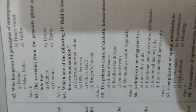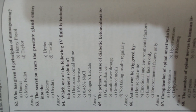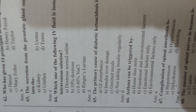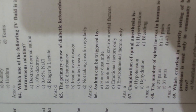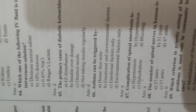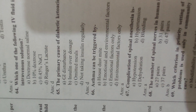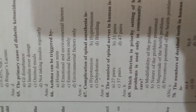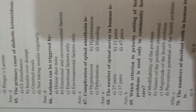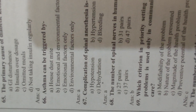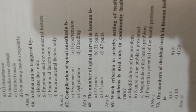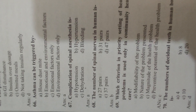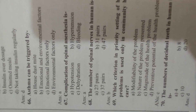Question 65: The primary cause of diabetic ketoacidosis is Answer D, not taking insulin regularly. Question 66: Asthma can be triggered by Answer A, house dust mites. Question 67: Complication of spinal anesthesia is Answer A, hypotension. Question 68: The number of spinal nerves in humans is Answer B, 31 pairs.